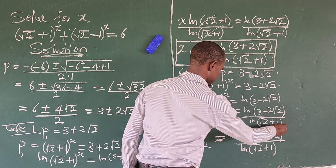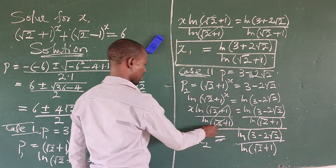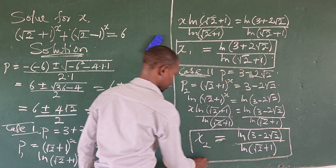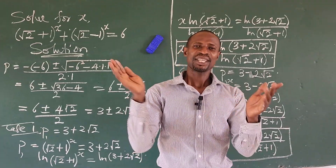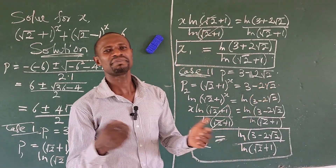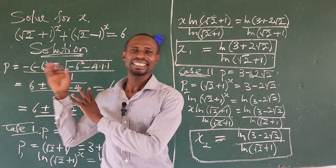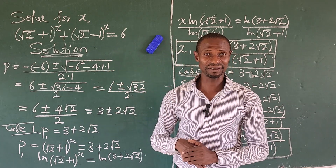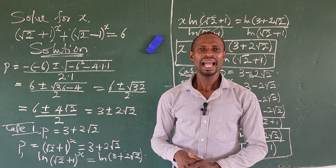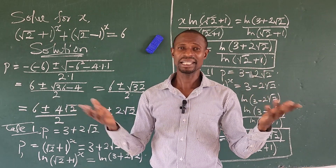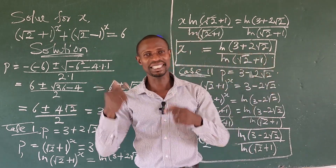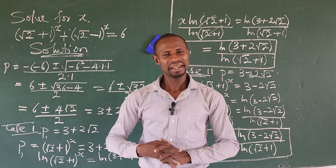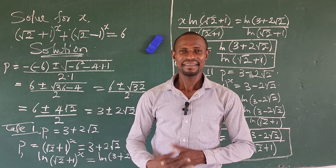Using the power rule, x₂ = ln(3 - 2√2) / ln(√2 + 1). This brings us to the end of this exponential challenge. If you learned something from this video, give it a like, and if you have a better way of solving this, drop it in the comment section. Thanks for being here — bye for now!